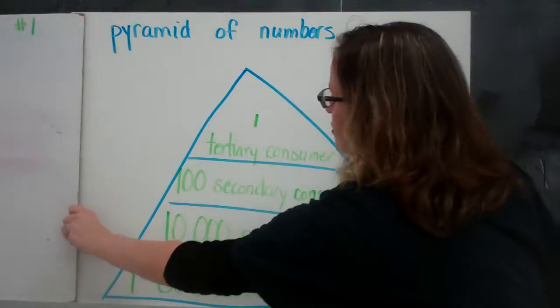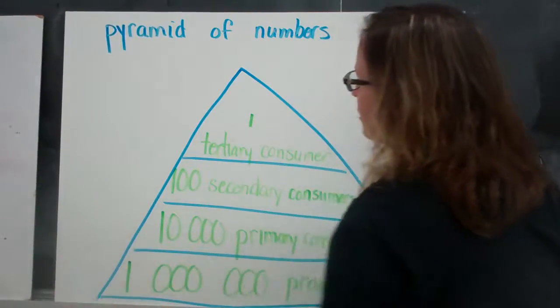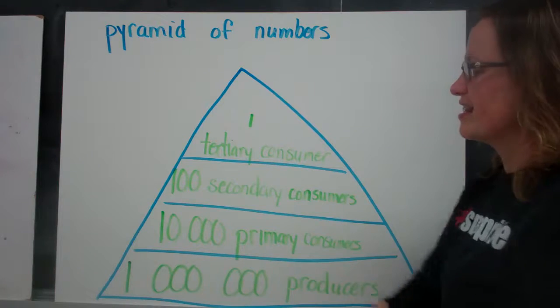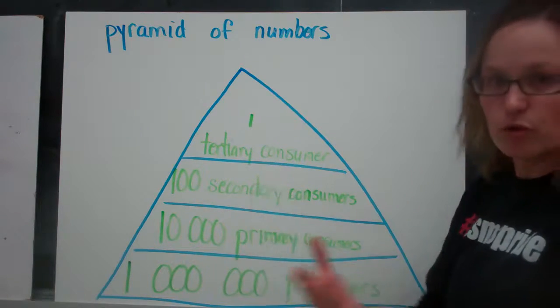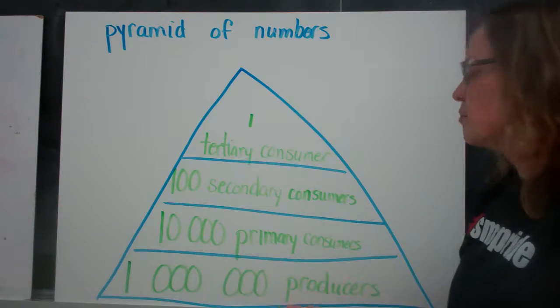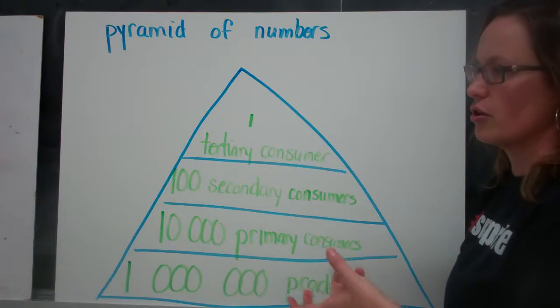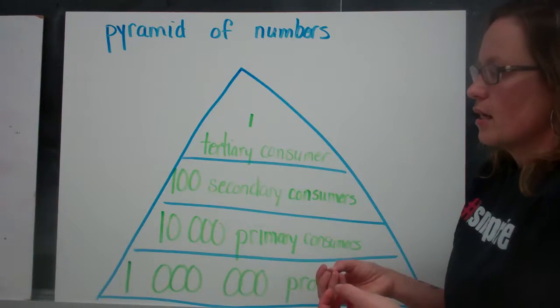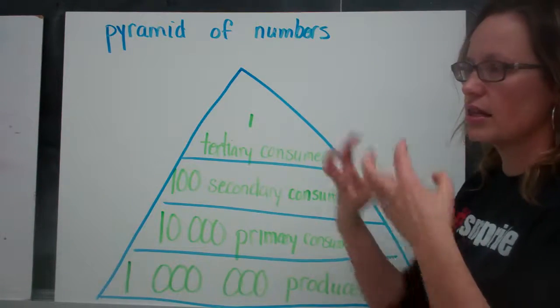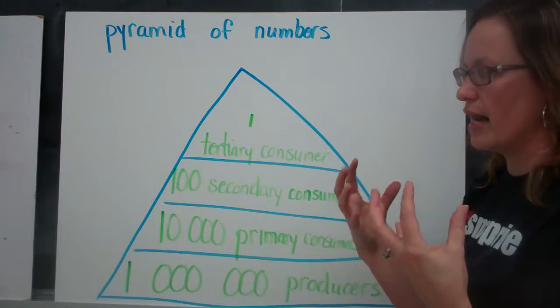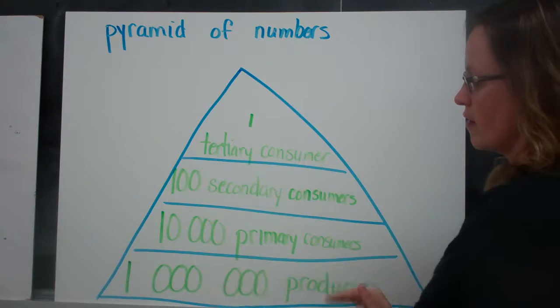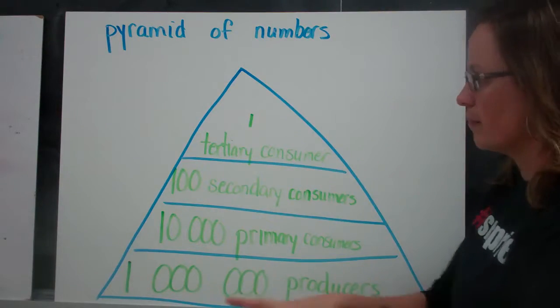So here's a really pretty pyramid of numbers. For example, let's say in a given region, there are 1 million producers. So these are the vegetation, those things that have gotten their basic needs from an abiotic element. And they've gotten that energy and then they will pass it on along that energy flow.